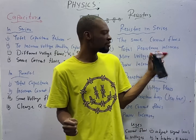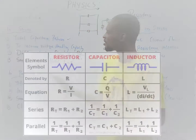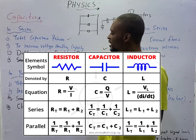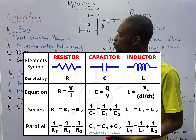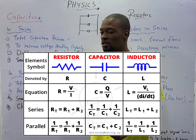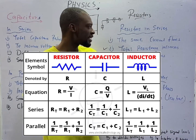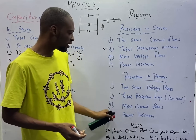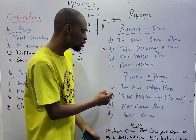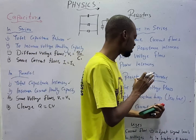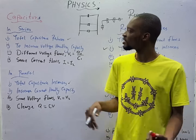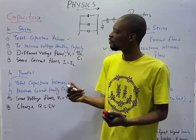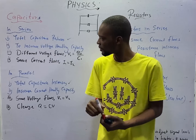In series, resistance adds up, but capacitance does not — it reduces. Meanwhile, in parallel, capacitance increases. So capacitors in parallel will give you the same result as resistors in series. And for resistors in parallel, the total resistance will drop. This means resistance for resistors in parallel is equivalent to capacitance in series. They are solved in opposite ways, which we shall see when we start solving problems.